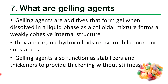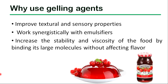The next type of food additive is gelling agents. They are additives that form a gel when dissolved in a liquid base, as a colloidal mixture forms a weakly cohesive internal structure. They are organic hydrophilic or inorganic substances. Gelling agents also function as stabilizers and thickeners to provide thickening without stiffness, and can improve the textural and sensory properties of foods. They work synergistically with emulsifiers, increasing the stability and viscosity of food by binding with large molecules without affecting the flavor.